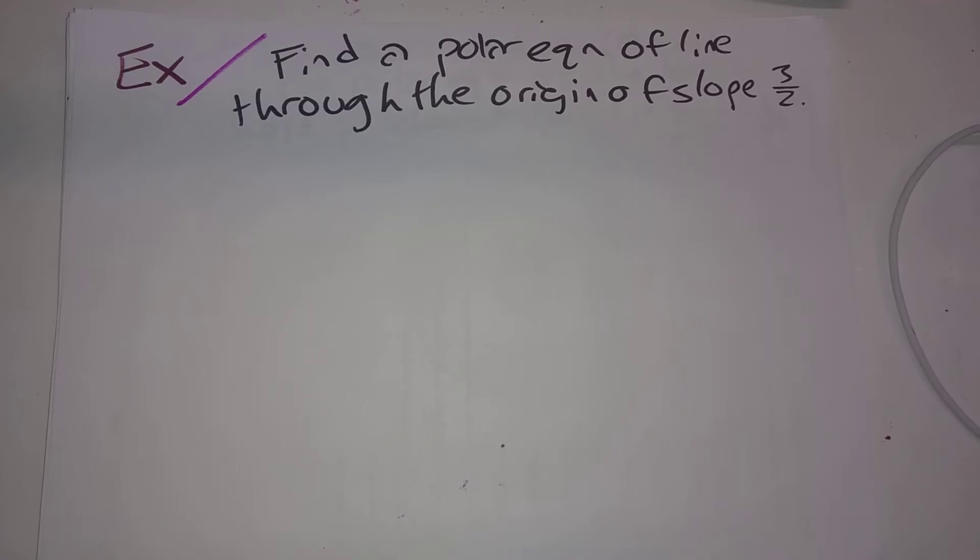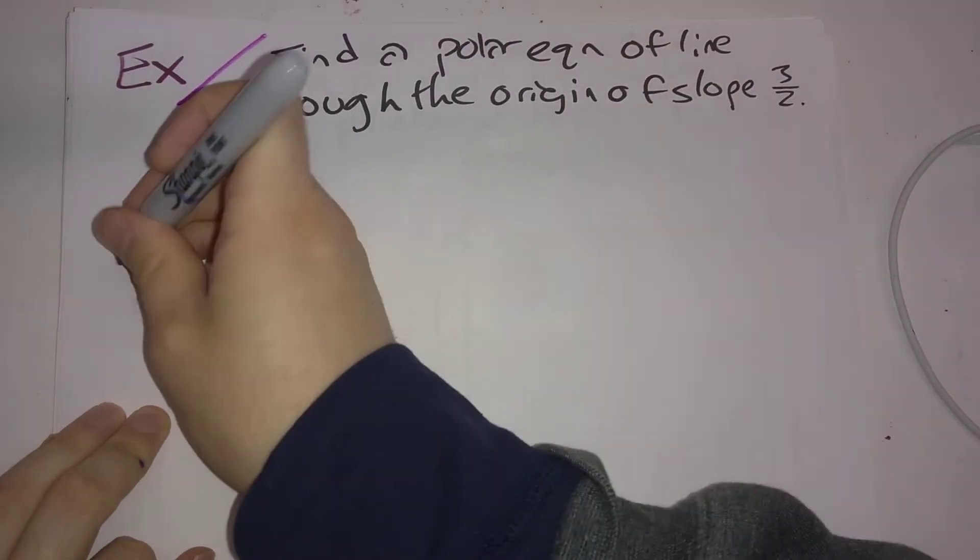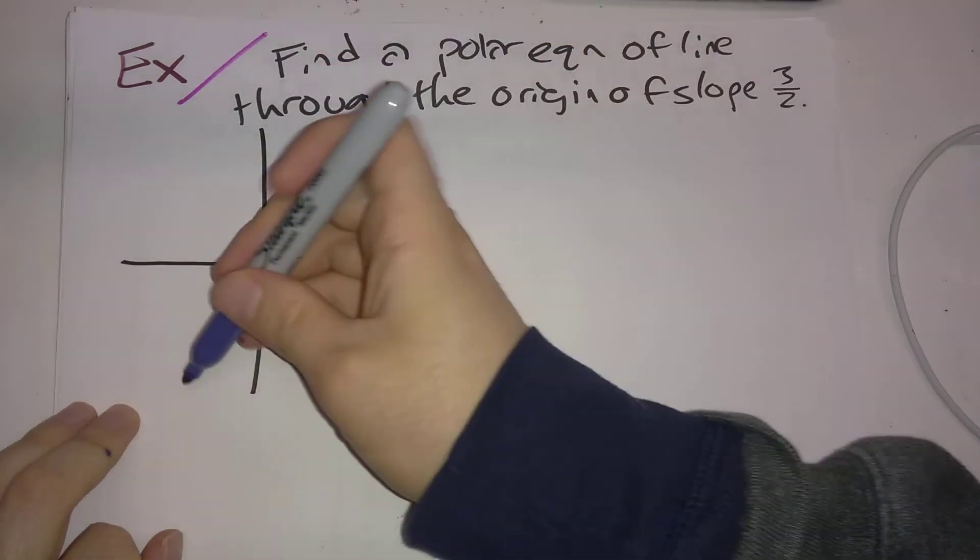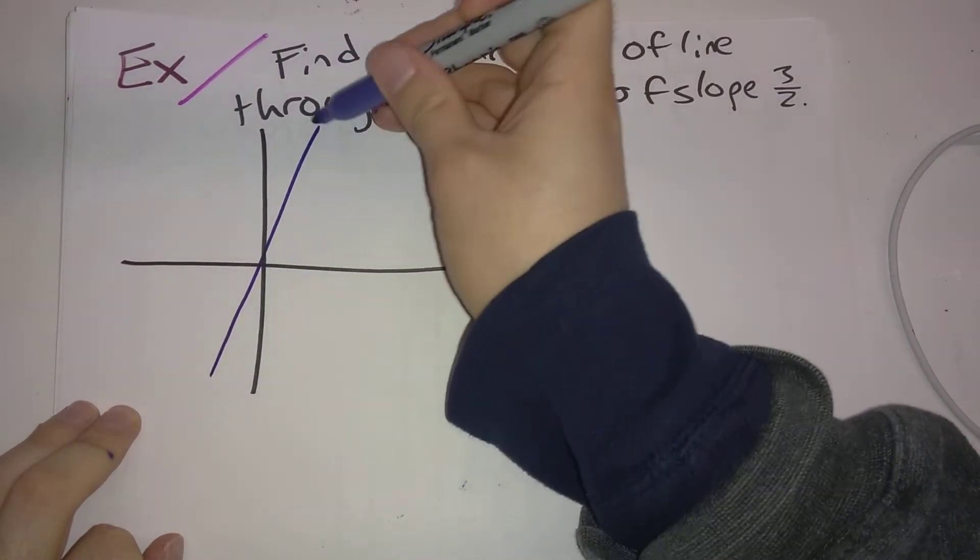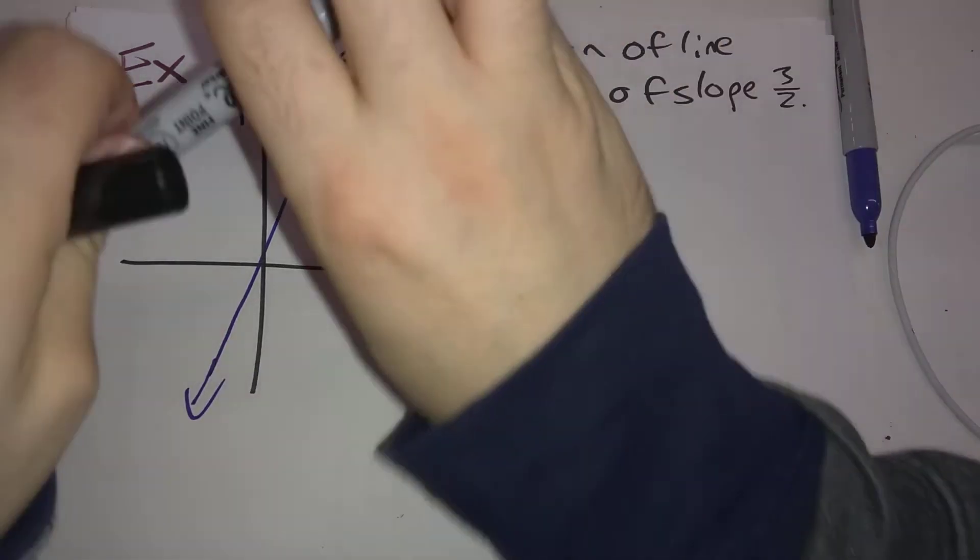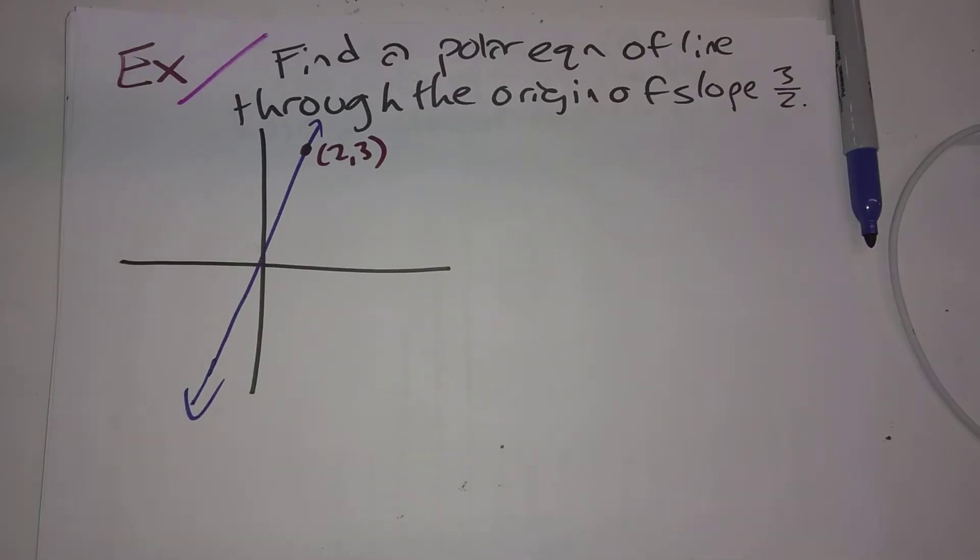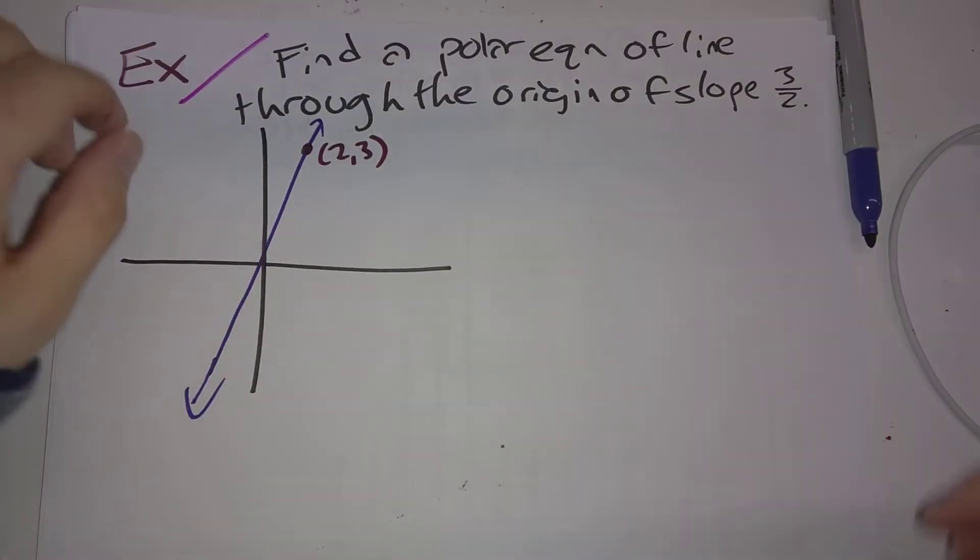Let's do a bunch of problems about lines. First, find a polar equation of a line through the origin of slope 3 halves. So let's draw a picture here. Here's a line through the origin of slope 3 halves. So, for example, the point 2, 3 is going to be on that line,